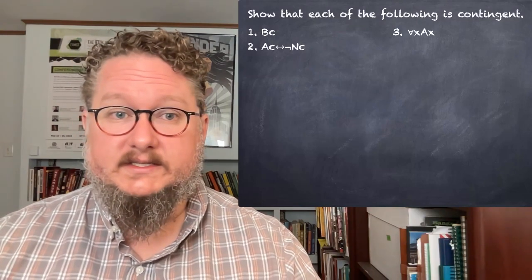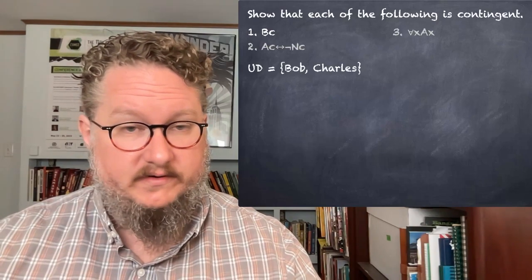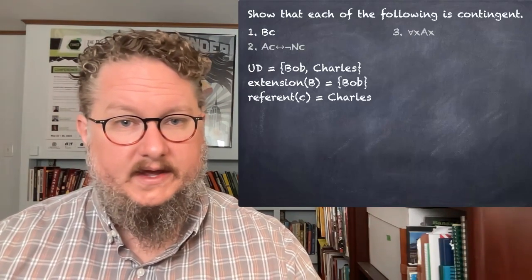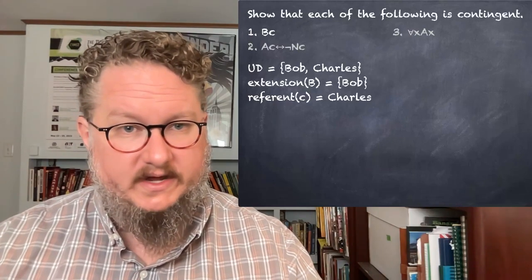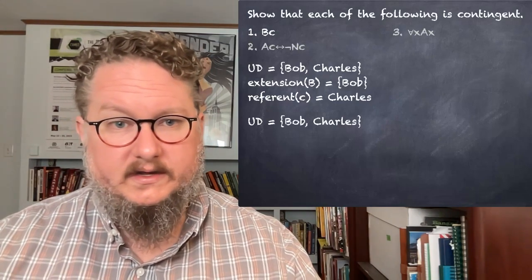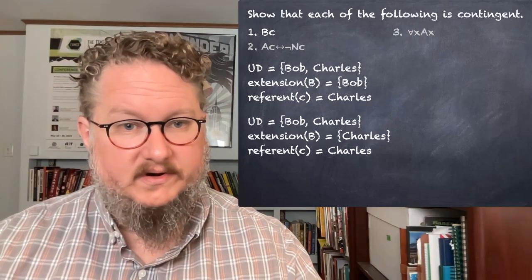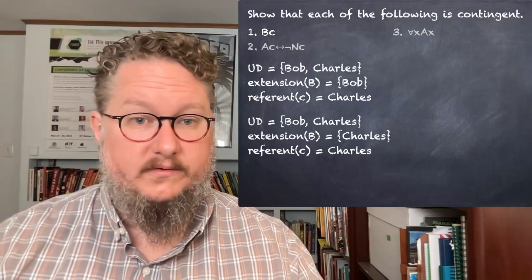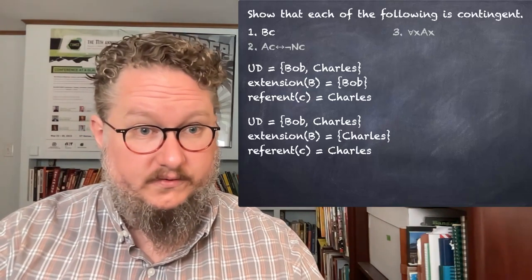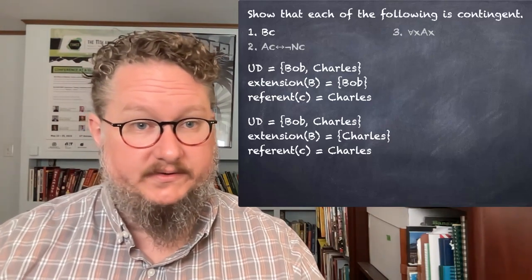Here are some examples of contingent sentences. For sentence one, BC: let's have a universe of discourse with two items, Bob and Charles. We'll say the extension of B is Bob and the referent of C is Charles. BC is false because Charles is not in the extension of B. For the second model, we add Charles to the extension of B — now BC is true because Charles is in the extension of B. So we have a model where it's false and one where it's true, showing it's contingent.